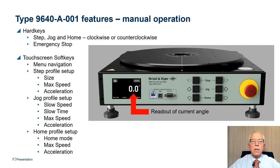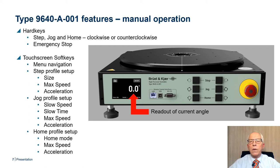Let us take a closer look at the front panel of the turntable. Here we find six hard keys for controlling the three main functions — step, jog, and home — supporting clockwise and counterclockwise rotation. We will also find the emergency stop that will halt rotation when activated. The touchscreen is located to the left on the front panel. This is where we find the soft keys for menu navigation and for setting up values for step, jog, and home profiles, as well as other relevant parameters. Of course, we will also find the readout of the current angle position in the display.